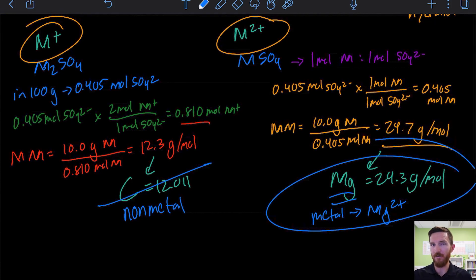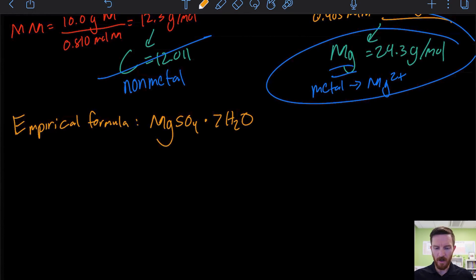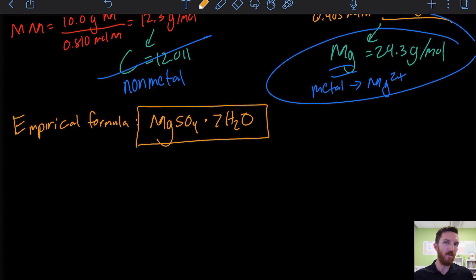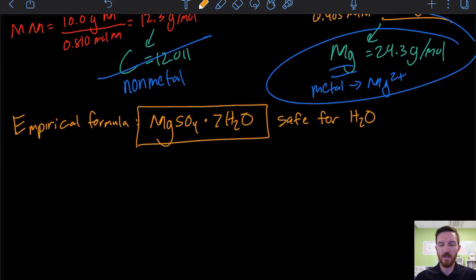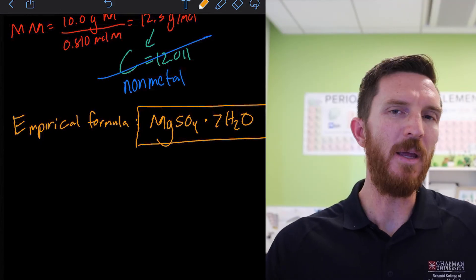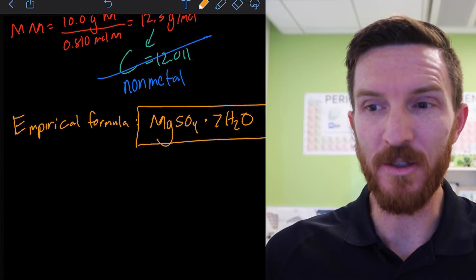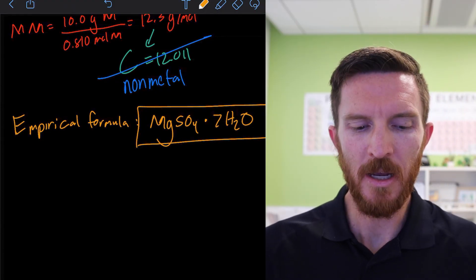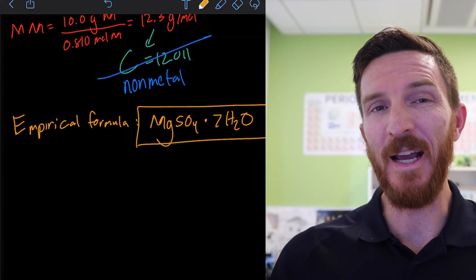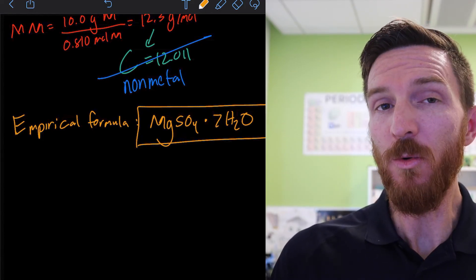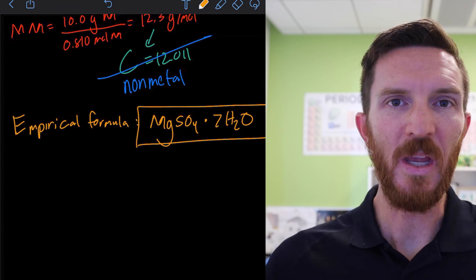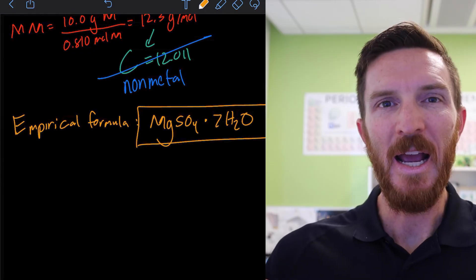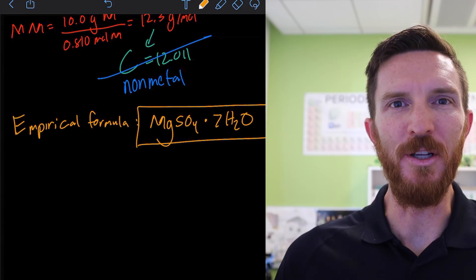We found that our metal was magnesium, making this magnesium sulfate with seven waters of hydration — MgSO₄·7H₂O. We've identified our empirical formula. We can say that this is safe in water: we have magnesium sulfate ions, something we could ingest, unlike lead which could be problematic. We identified our empirical formula by analyzing the amount of sulfate, the amount of water, and from that the amount of metal. We were successful — we identified what this substance was and reported it to Dean Iba, who gave the approval.